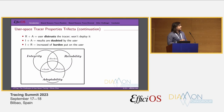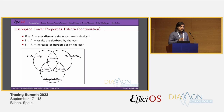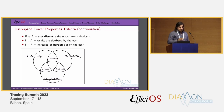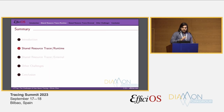We can represent this as a Venn diagram. When we miss the integrity part — the most important part — the user distrusts the tracer and will not deploy it. If you lack reliability, results will be doubted by the user. And if you lack adaptability, you increase the burden on the user because they have to provide more configuration. That was the introduction. Now we'll talk about problems related to shared resources between the tracer and runtimes.